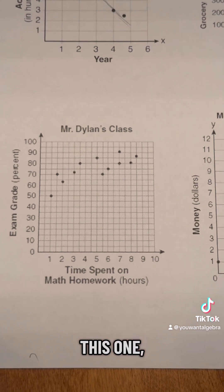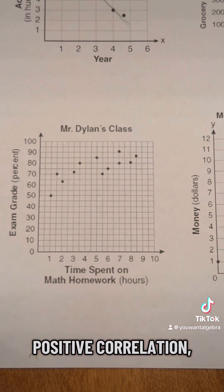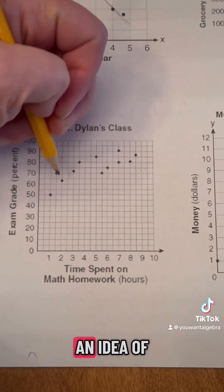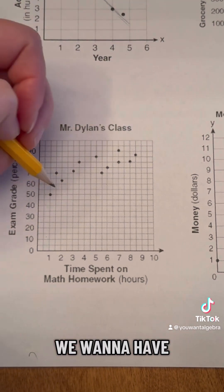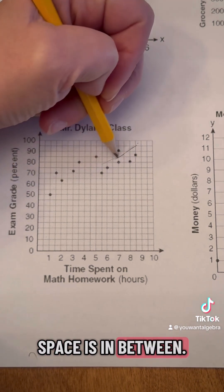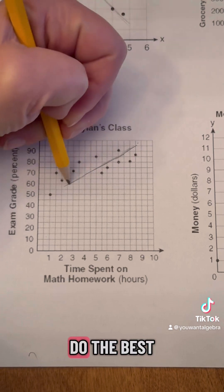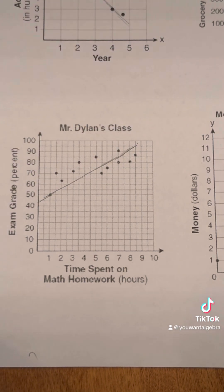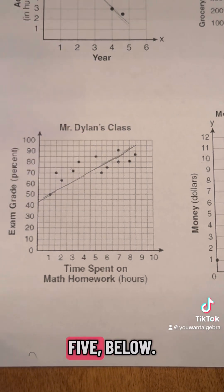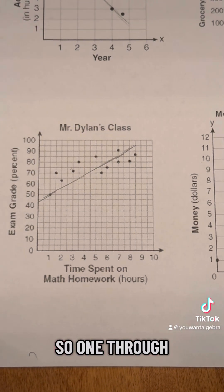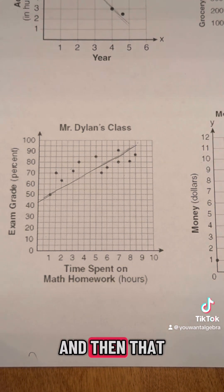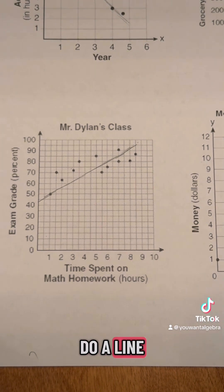If you look down here at this one, we see a positive correlation and it's a little bit weaker. When you're trying to figure out how this might look, you want to have points above and below. Trying to space things in between as best you can. Counting the points: six above the line, five below it, and it went through one point. That's okay to have. That gives you a good idea of how to do a line of best fit by hand.